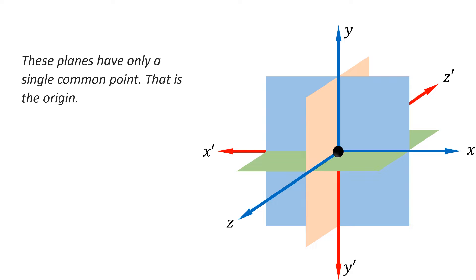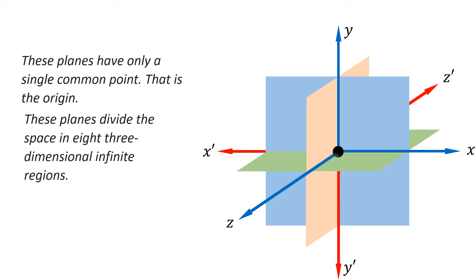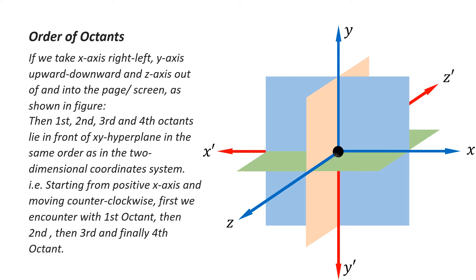These three planes have only a single common point, the origin. These planes divide space into eight three-dimensional infinite regions called octants. If we take x-axis right-left, y-axis upward-downward, and z-axis out of and into the page, then the first, second, third, and fourth octants lie in front of the x-y hyperplane in counter-clockwise order starting from the positive x-axis.